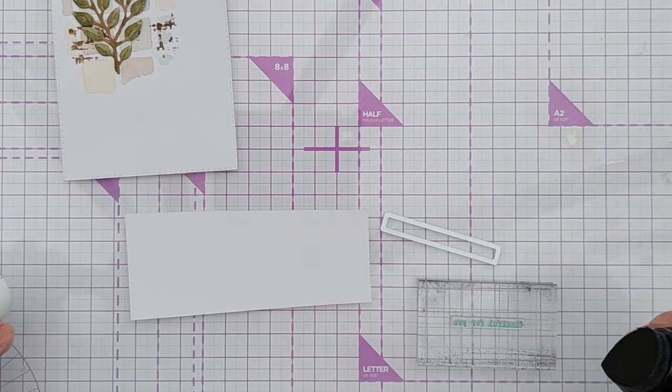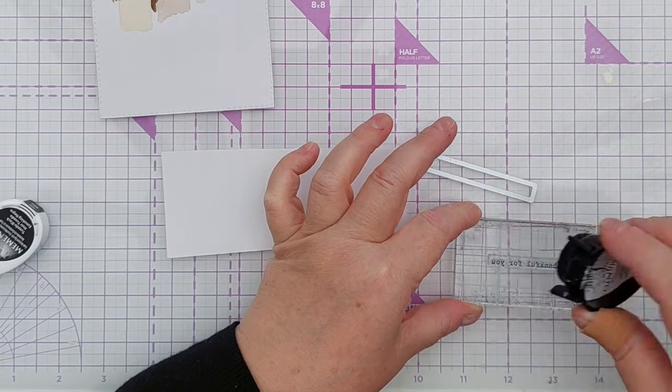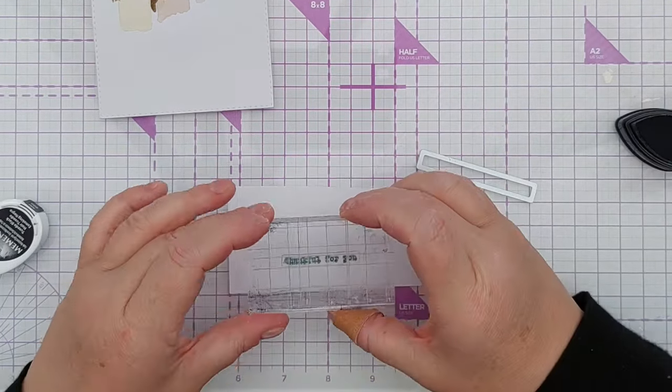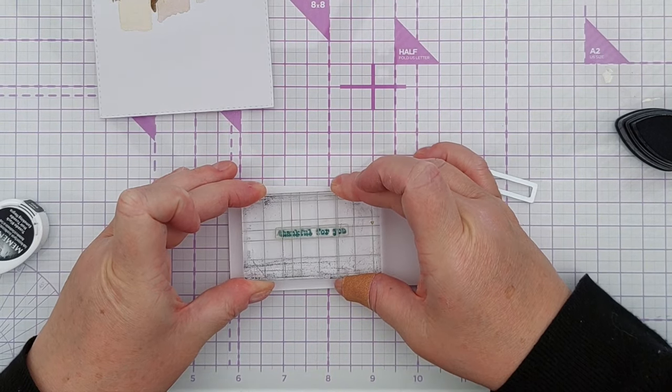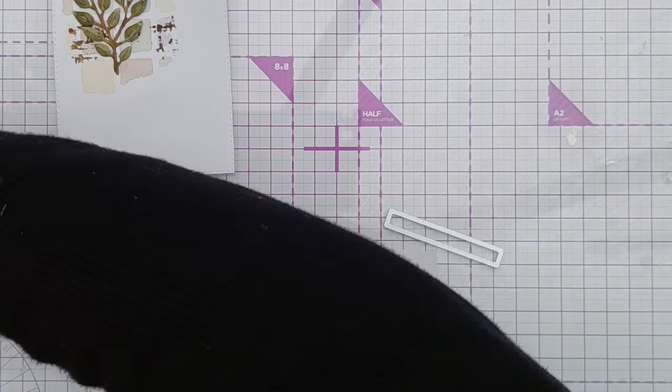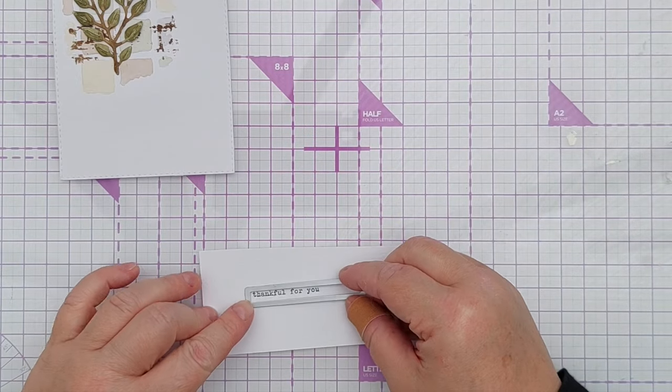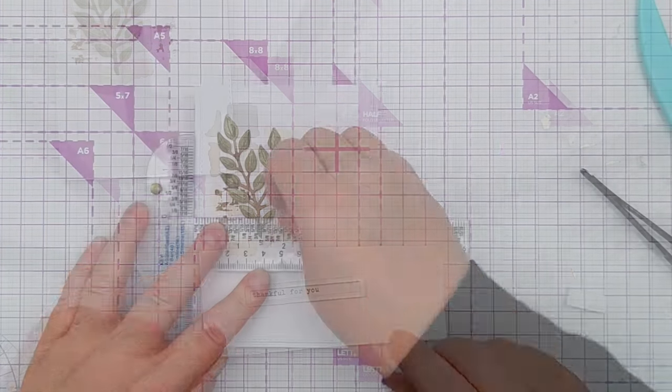For my sentiment I've got this thankful for you stamp in an old typewriter font. I'm going to stamp it on some mixed media paper so it's the same as this and I've used black ink to help it stand out a bit and I'm going to die cut it with this stitched rectangle die.